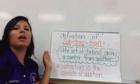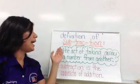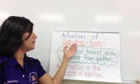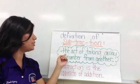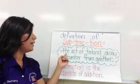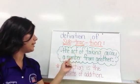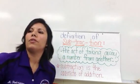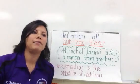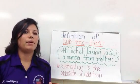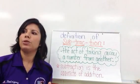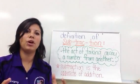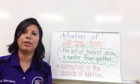First we will talk about the definition. You pronounce it as subtraction. The definition states: the action of taking away a number from another number. So for example, when you have two numbers, you have a number and you're going to subtract something from it — you take it away, and whatever is left over, that would be your answer.